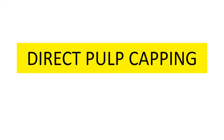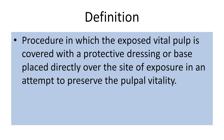Today we are going to discuss direct pulp capping. As the name suggests, direct pulp capping is a procedure where you have to save the vitality of the pulp even when pulp exposure has occurred. It is defined as a procedure in which the exposed pulp is covered with a protective dressing or base placed directly over the site of exposure in an attempt to preserve pulpal vitality.